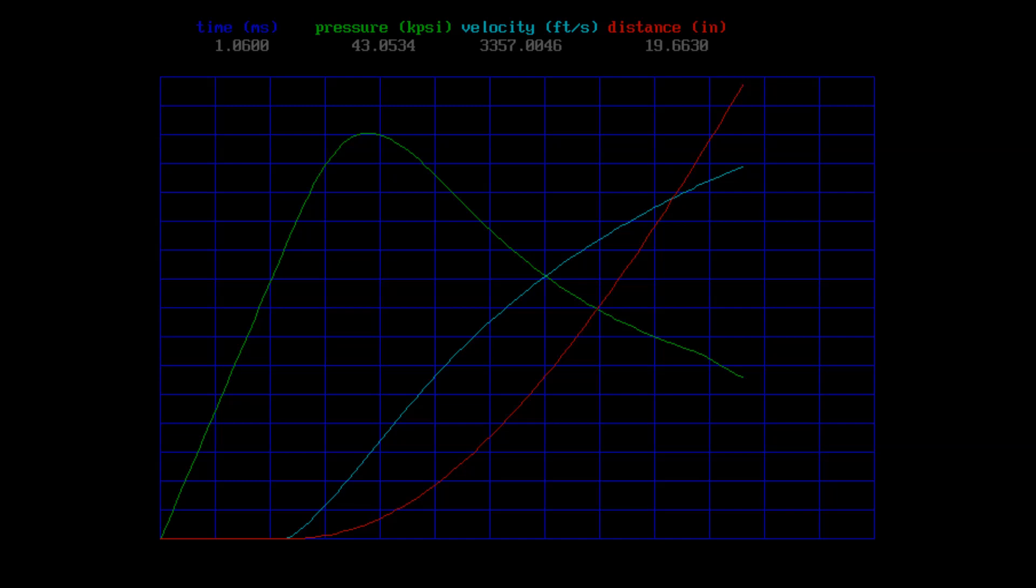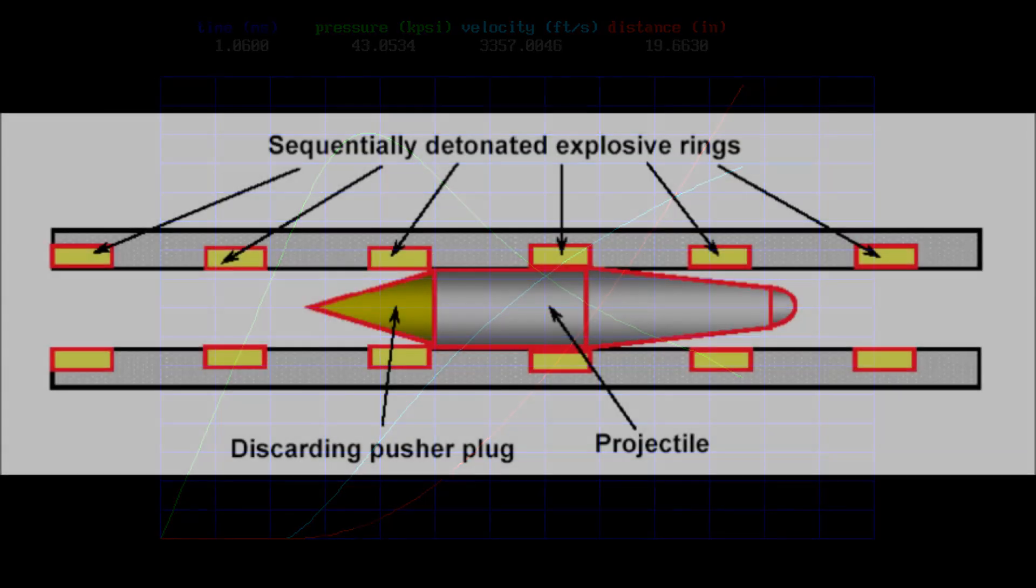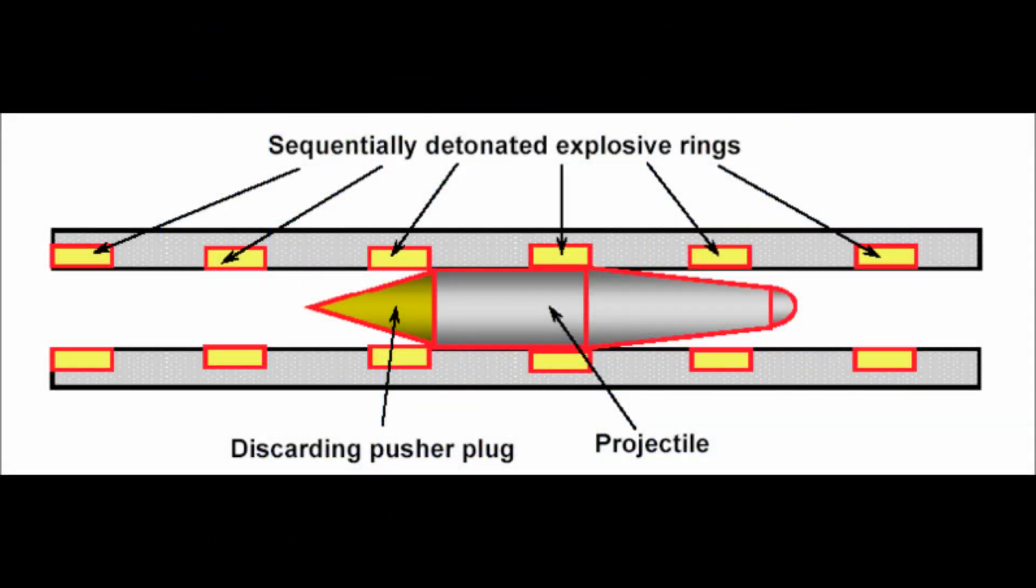There's actually a couple of interesting gun designs which remedy this to a certain extent. One idea is the blast wave accelerator, which is like the chemical explosive version of an electromagnetic coil gun. The idea is that as the projectile travels down the barrel, you detonate more explosives to keep the pressure up. Therefore, the pressure wave remains high and the projectile essentially surfs this ongoing explosion down the barrel.